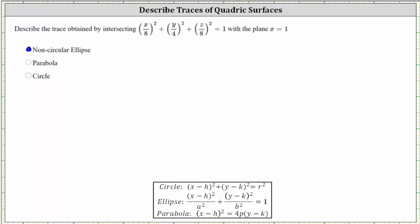To verify this algebraically, we substitute one for x into the equation of the quadratic surface and then write the equation in the form of an ellipse shown below.